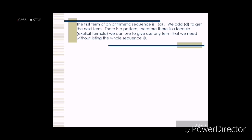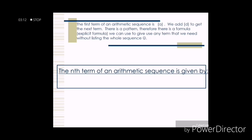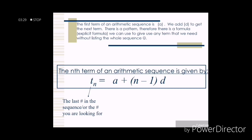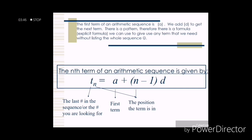The first term of an arithmetic sequence is a; we add the common difference to get the next term. There is a pattern, and therefore there is an explicit formula we can use to find any term without listing the whole sequence. The nth term is given by the formula: t sub n equals a plus the quantity (n minus 1) times d, where t sub n is the term we are looking for, a is the first term, n is the position of the term, and d is the common difference.